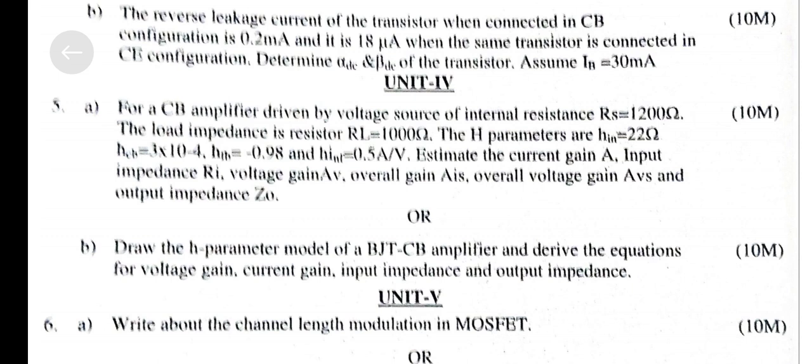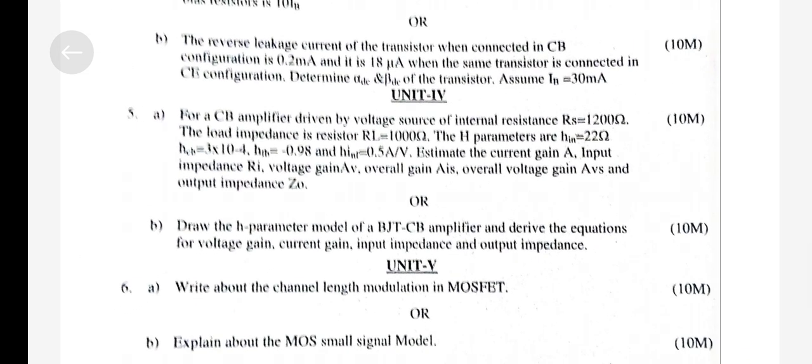Estimate the current gain Ai, input impedance Ri, voltage gain AV, overall voltage gain AVS, and output impedance Z0. Draw the H parameters model of BJT CB amplifier and derive the equations for voltage gain, current gain, input impedance, and output impedance.